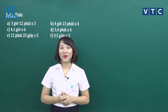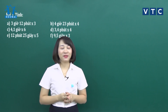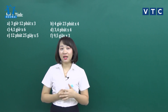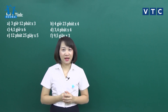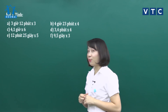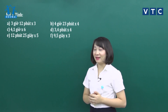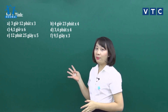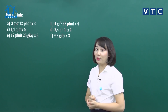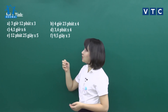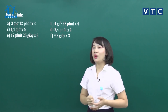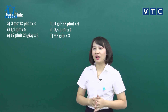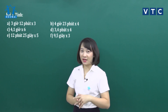Qua những phần cô đã hướng dẫn, chúng mình sẽ cùng nhau luyện tập những bài tập để làm rõ hơn các bước cần thực hiện khi nhân hay chia số đo thời gian với một số. Ở bài tập số 1 chúng ta đang có 6 phép tính. Việc tính toán nhiều như này giúp các con rèn luyện và tự phân biệt được khi nào cần đổi đơn vị đo thời gian và khi nào thì không.